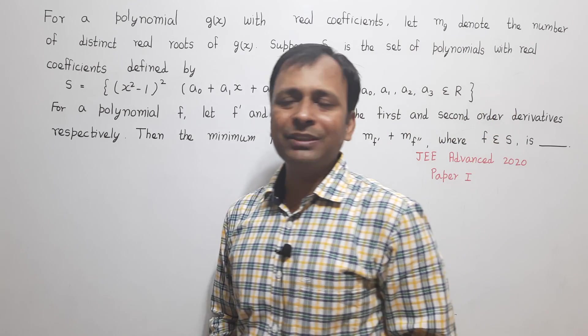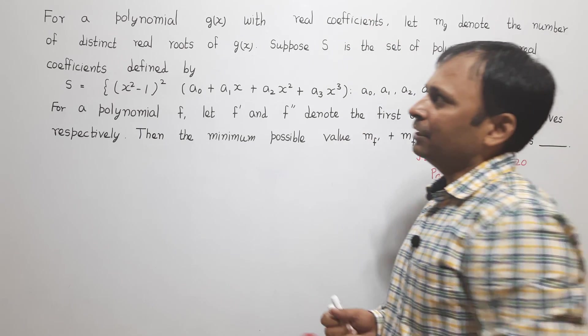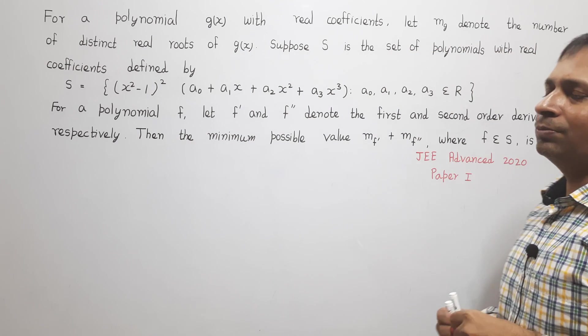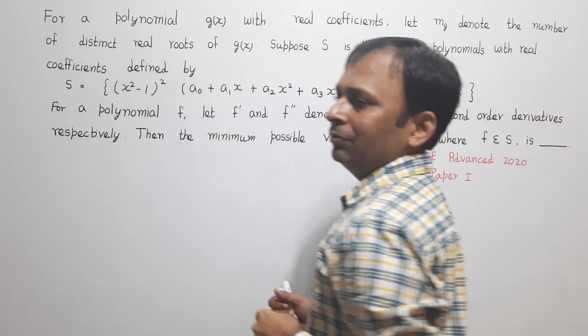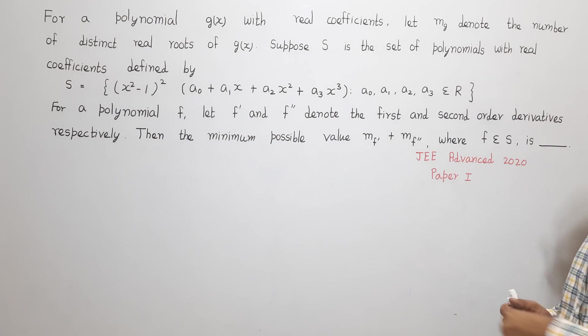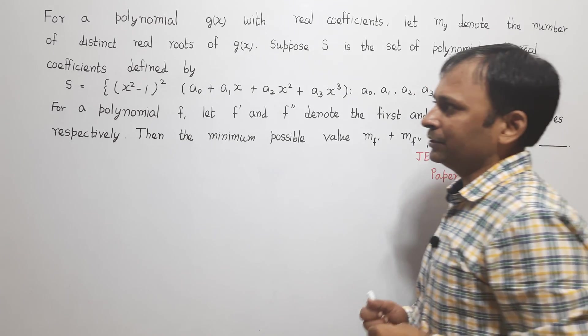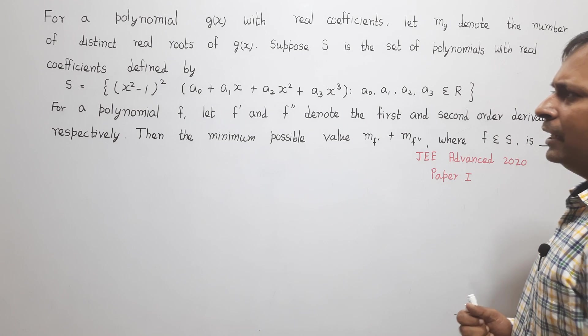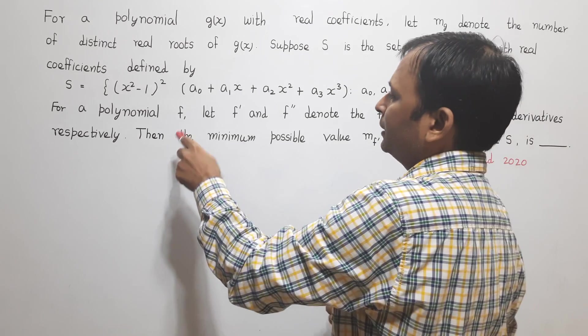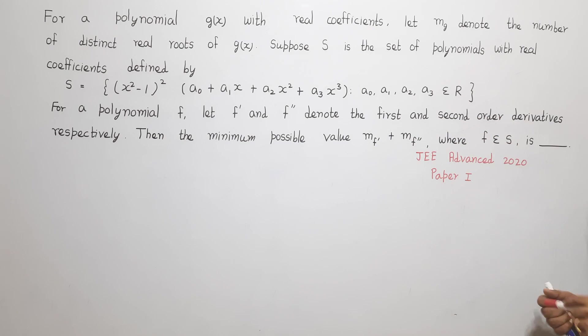I will first read out the problem which says that for a polynomial g(x) with real coefficients, let M_g denote the number of distinct real roots of g(x). Suppose S is the set of polynomials with real coefficients defined by S = {(x²-1)²(a₀ + a₁x + a₂x² + a₃x³)} where a₀, a₁, a₂, a₃ belong to the set of real numbers. For a polynomial f, let f' and f'' denote the first and second order derivatives respectively. Then the minimum possible value of M_f' + M_f'' where f belongs to the set S is.